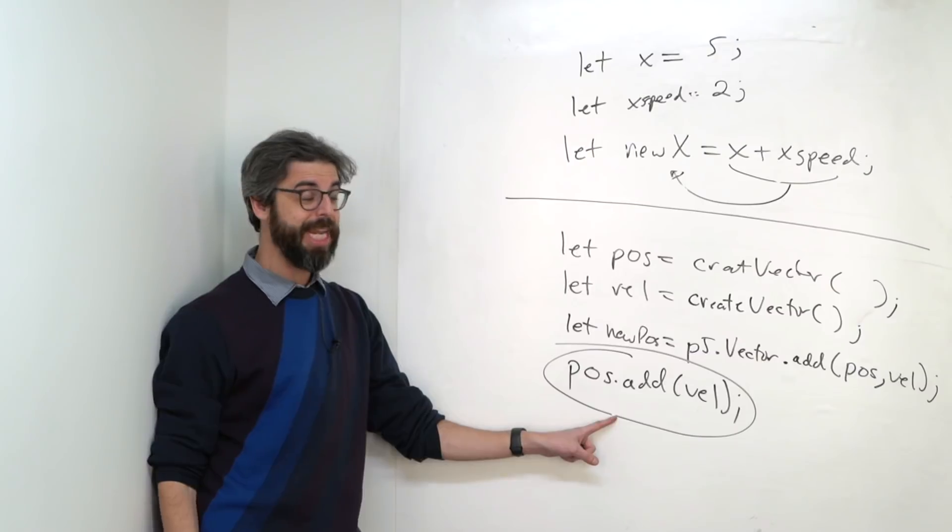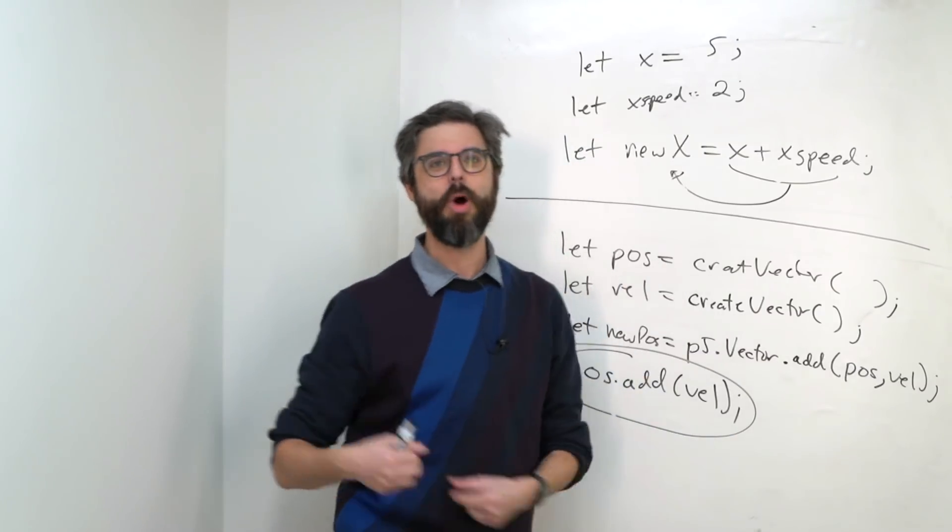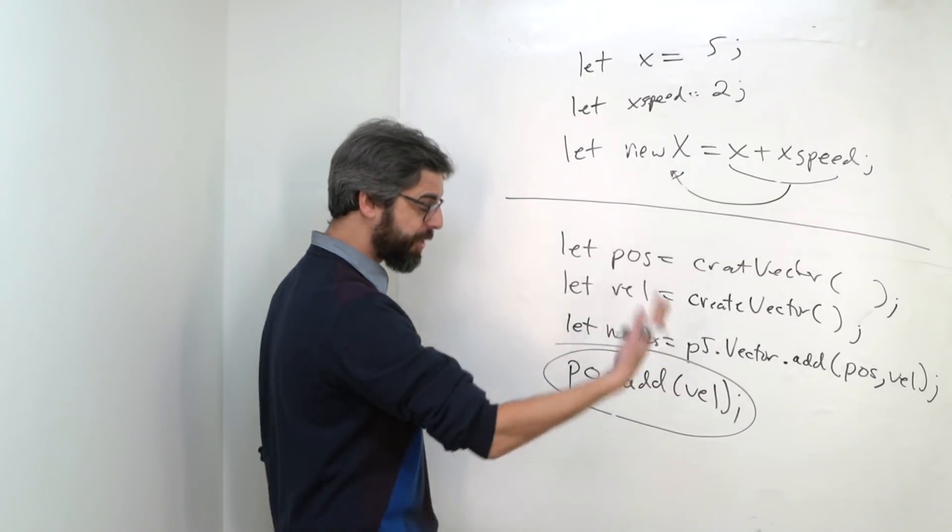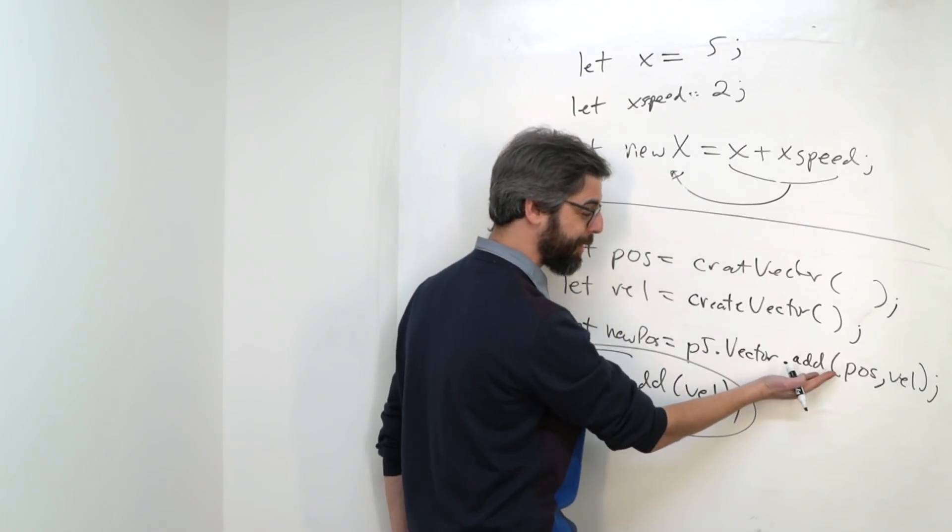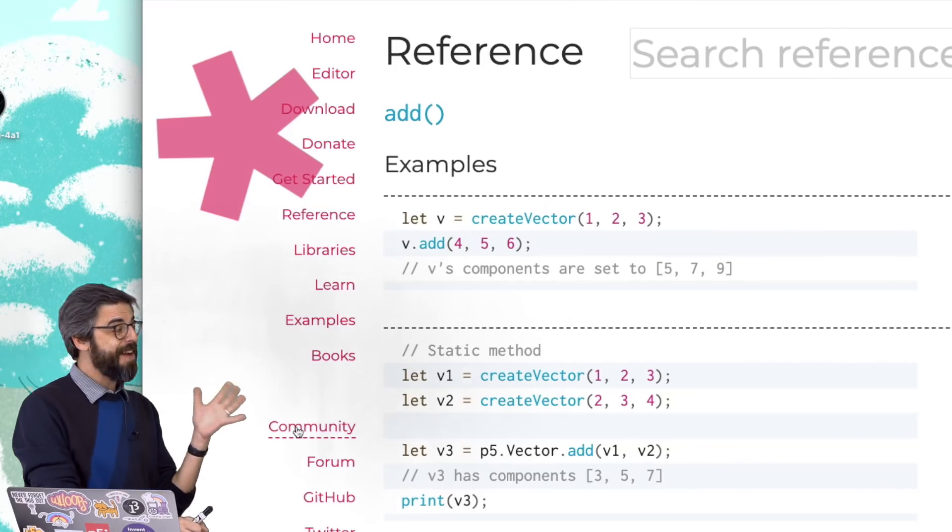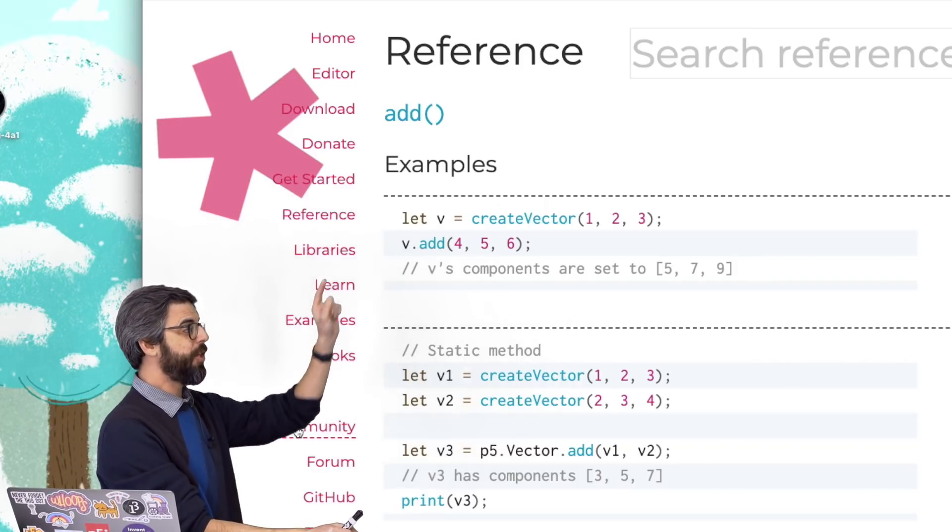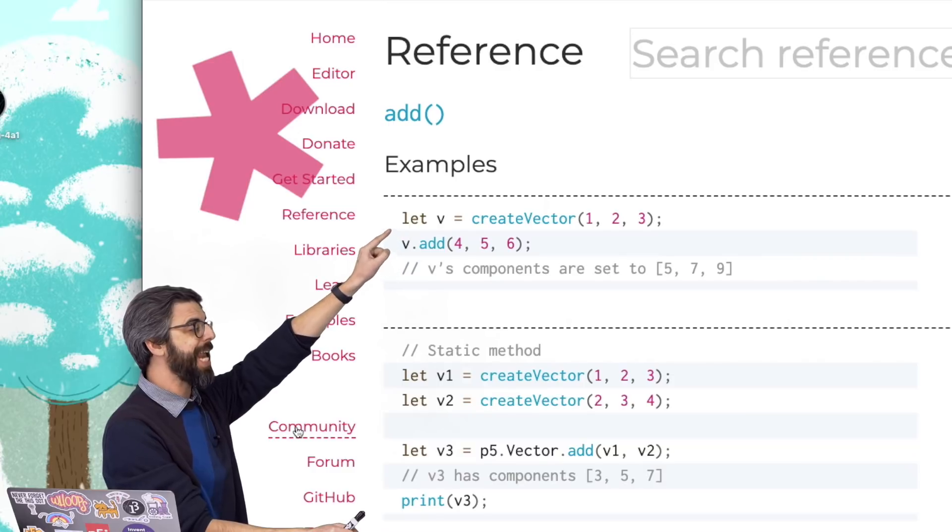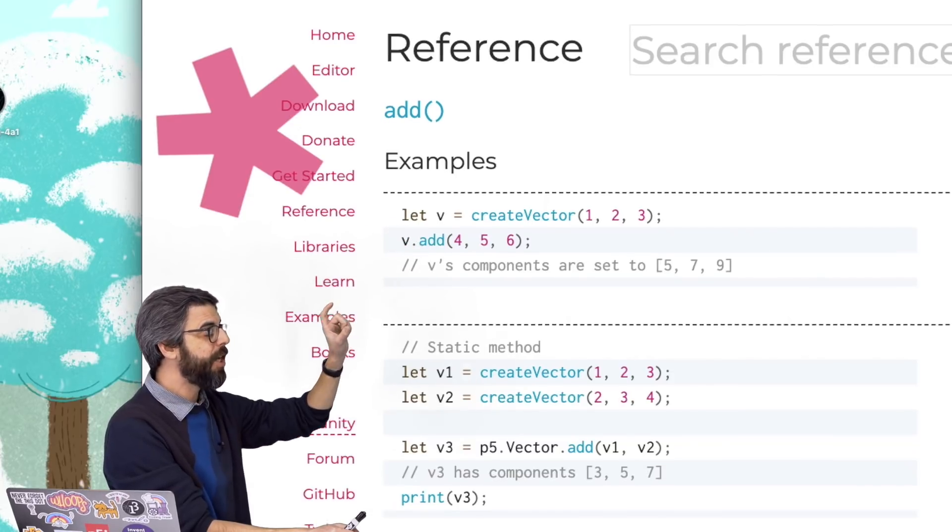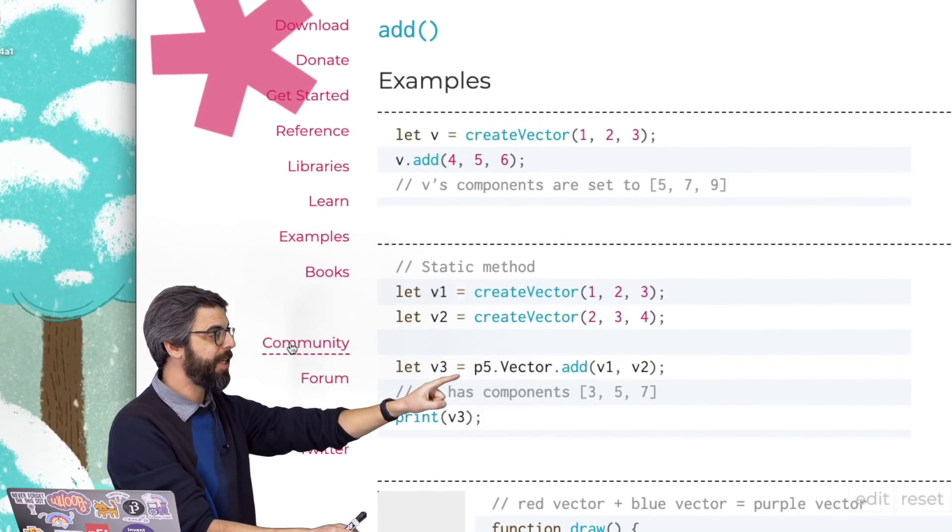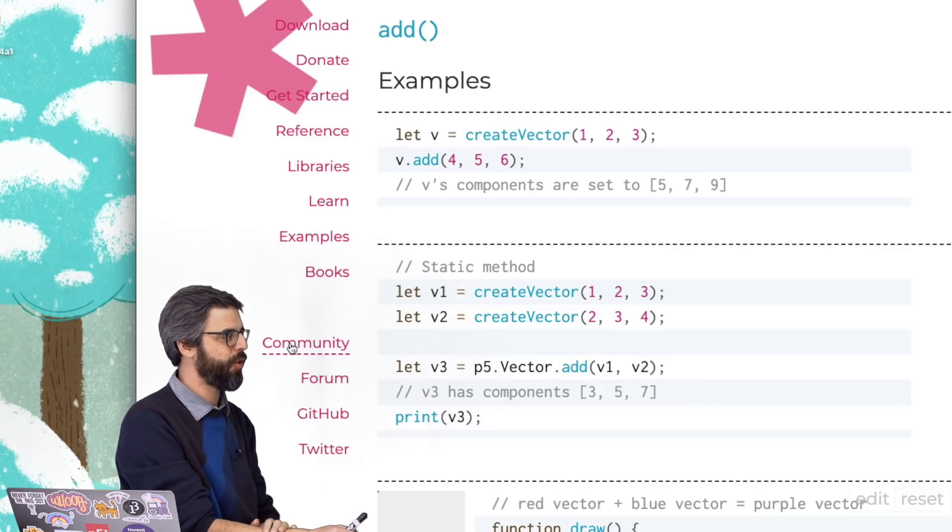So while this is very common in our physics algorithms, position changes by velocity, and in a moment, we'll see velocity changes by acceleration. There are certain times where I want to do an operation like this, and there are more examples of that than just add as well. And this, in fact, is exactly what's demonstrated on the p5 reference. You can see here v equals create vector v dot add. It actually changes these components themselves versus having v1 and v2, and then saying p5 dot vector add v1 and v2, and putting that in a new vector v3.